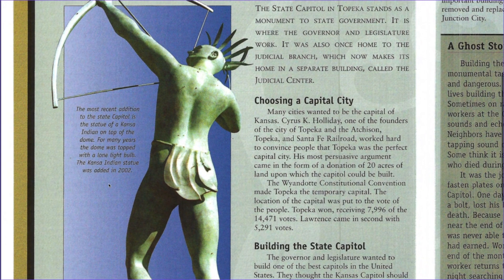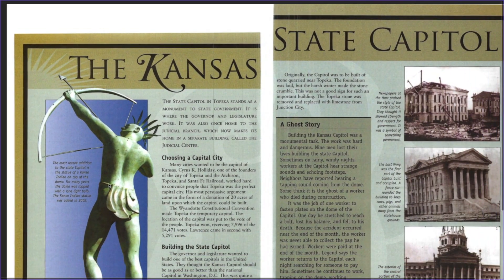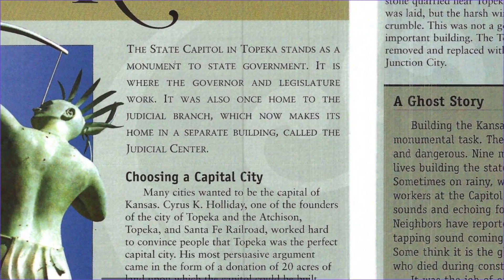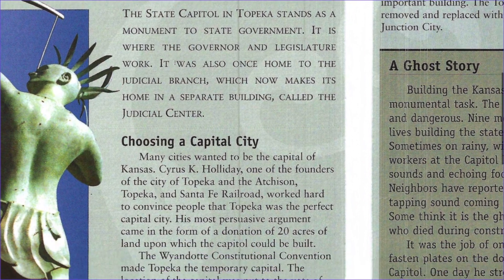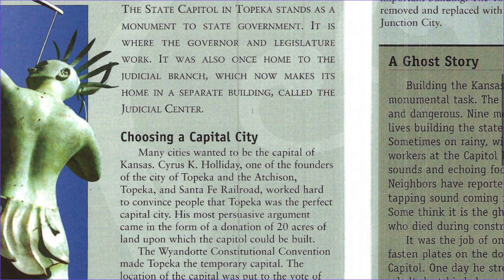The most recent addition to the state capitol is the statue of the Kansa Indian on top of the dome. For many years, the dome was topped with a lone lightbulb. The Kansa Indian statue was added in 2002. This spread says the Kansas State Capitol. The state capitol in Topeka stands as a monument to state government. It is where the governor and the legislature work. It was also once the home to the judicial branch, which now makes its home in a separate building called the Judicial Center.